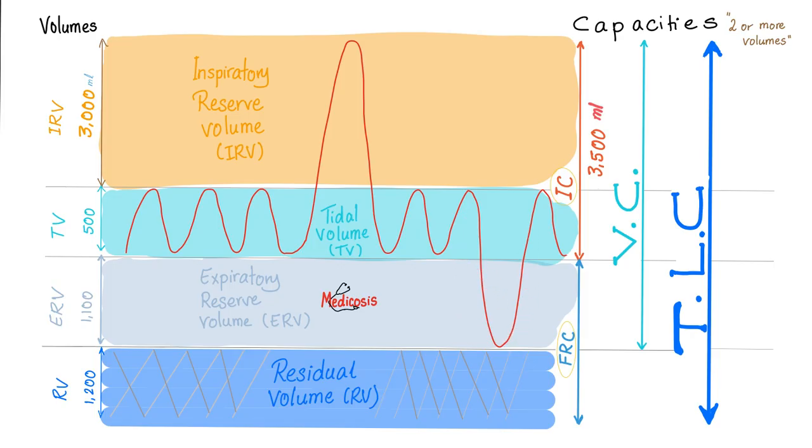Expiratory reserve volume, because this is expiration. The tidal volume is 500. The expiratory reserve volume is 1,100. Even after Adam exhaled to the maximum of his abilities, still Adam had some air left in his lungs. And this is called the residual volume. You cannot get it out under normal circumstances. The residual volume is 1,200 mls. If you add these two volumes together, you get a capacity known as the functional residual capacity. So 1,100 plus 1,200 equals 2,300 mls.